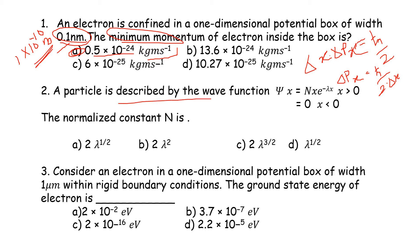Question 2: A particle is described by the wave function ψ(x) = Nxe^(-λx) for x > 0, and 0 for x < 0. We need to find the normalization constant N.